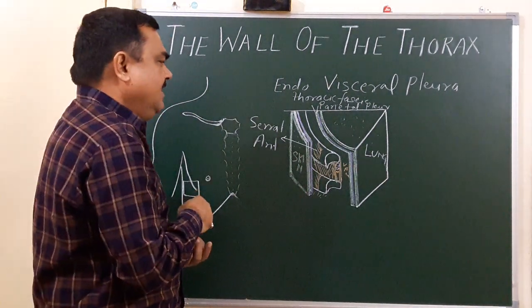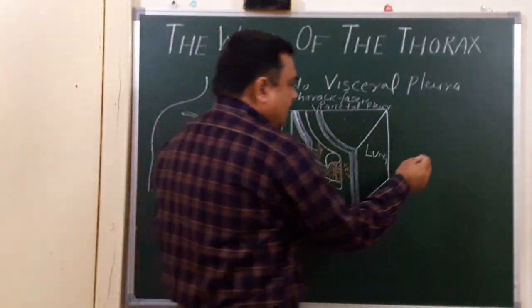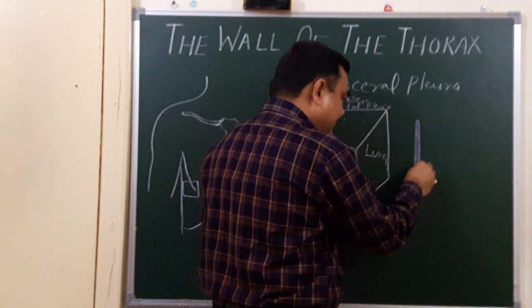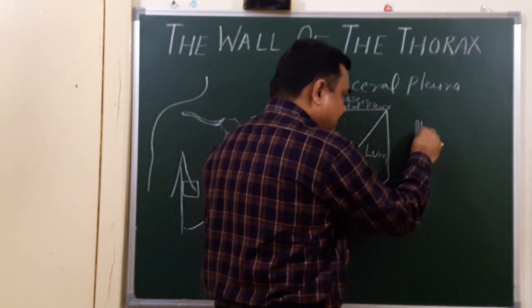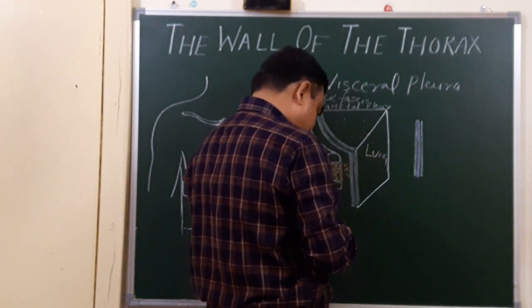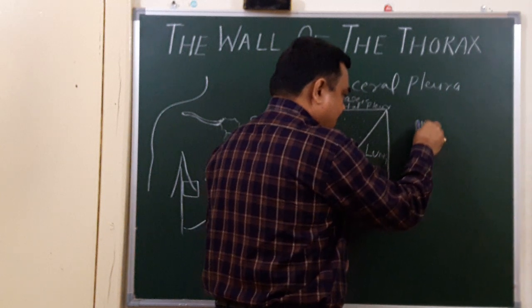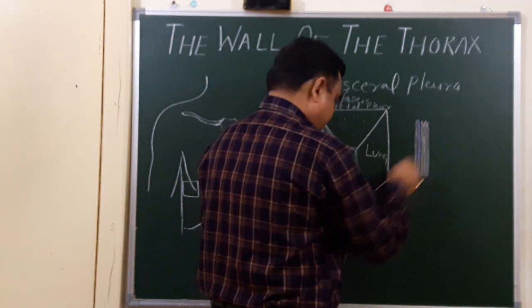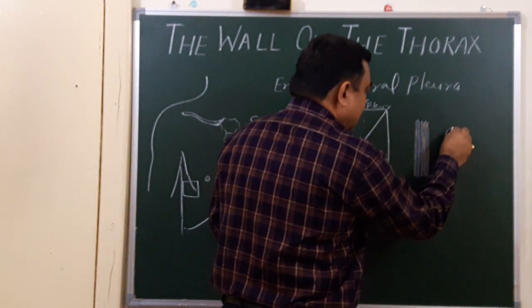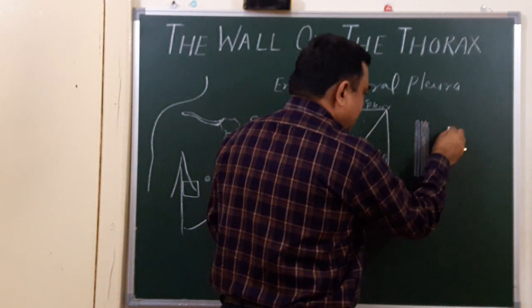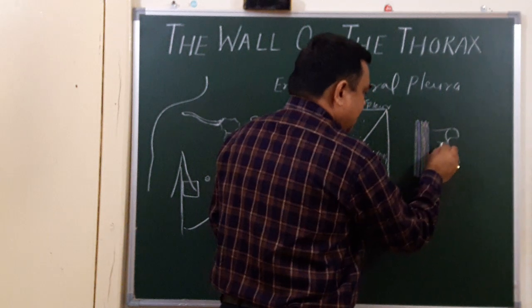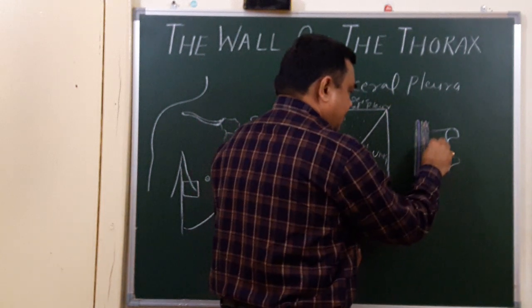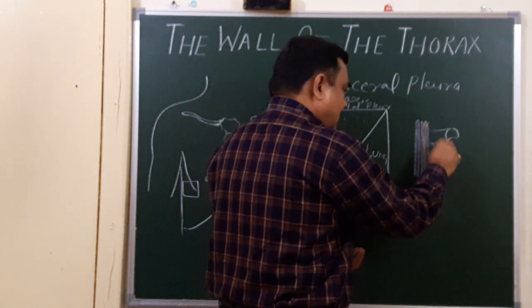If you look at a two-dimensional diagram, you will find: the outermost structure is skin, then superficial fascia, then deep fascia, then a group of extrinsic muscles attached to this region, and then several muscles — the external intercostals and internal intercostals.